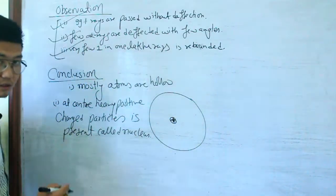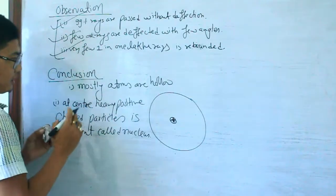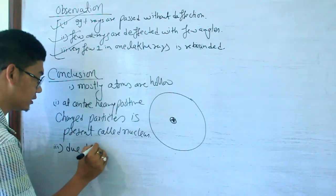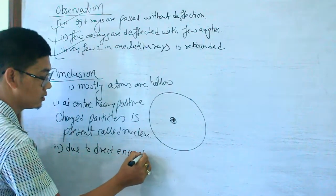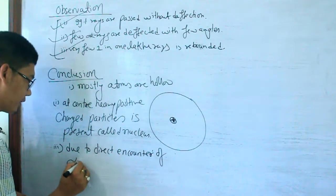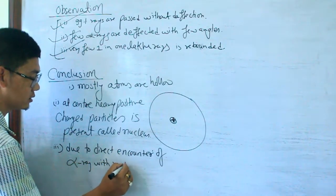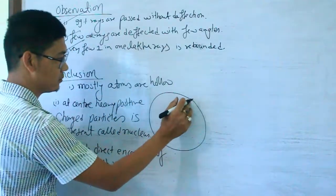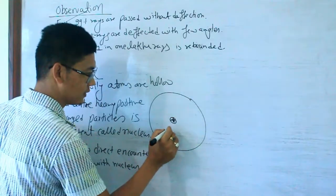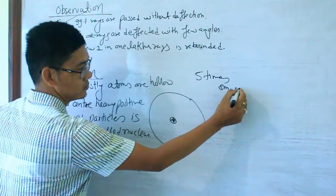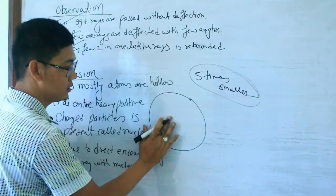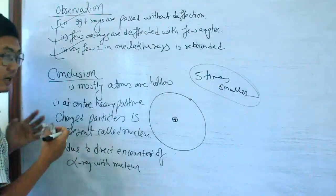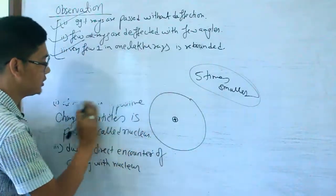The nucleus is present at the center with heavy positive charge. The size of the nucleus is about 5 times smaller than the size of the atom. Very few rays are rebounded due to direct encounter with this dense nucleus. You can imagine a small nucleus inside a much larger atom.